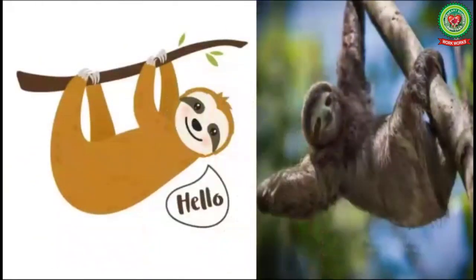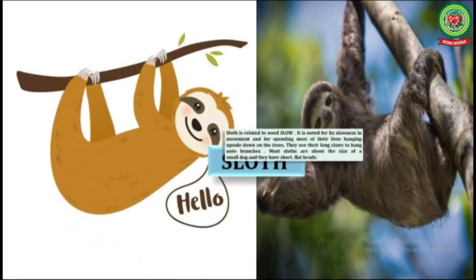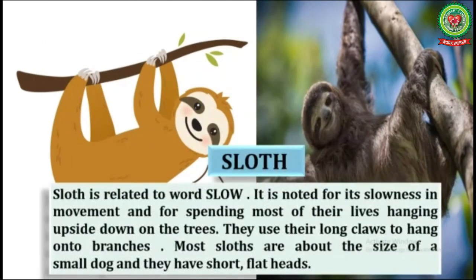And the last is sloth. Sloth is related to the word slow. It is noted for its slowness in movement and for spending most of its life hanging upside down on trees. They use their long claws to hang onto branches. Most sloths are about the size of a small dog and they have short flat heads.